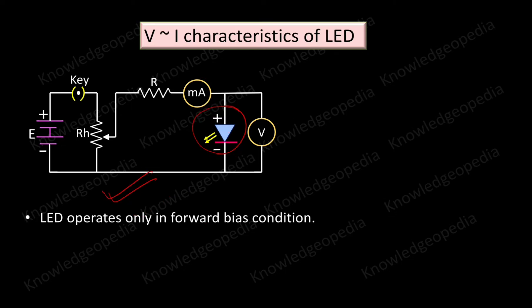For plotting the V-I characteristics of LED, we will be considering the forward voltage along the x-axis and the forward current along the y-axis. This forward voltage is measured in volt and the forward current is measured in terms of milliampere.